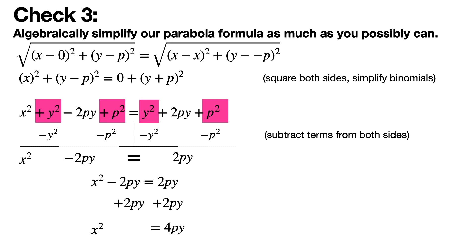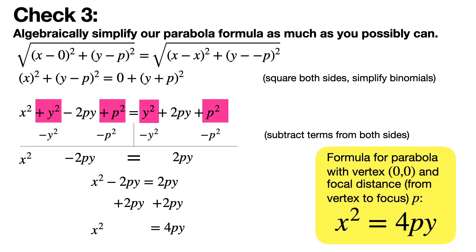You can simplify this a little more by adding 2py to both sides to get a rather nice formula: x squared equals 4py. This is the formula for a parabola with vertex of zero zero, and the focal distance from vertex to focus or from vertex to directrix p is x squared equals 4py.